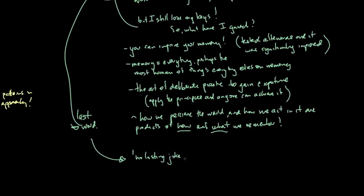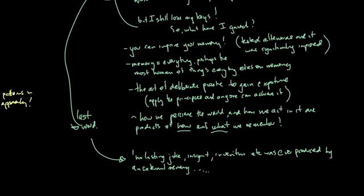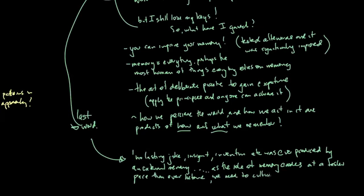His very last word, and I think this is just coming down to the journey he's been on and how much he's learned, how we rely on memory and what it means. But his comment at the very end of the book is that no lasting joke or insight or invention was ever produced by an external memory, i.e. hard drives, phones, or whatever. It's all done by the human brain. As the role of memory erodes at a faster pace than ever before, we need to cultivate our ability to remember. Our memories make us who we are.